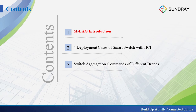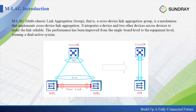As we said before, MLAG stands for Multi-Chassis Link Aggregation Group — this is a cross-device link aggregation group. It's a mechanism that can implement cross-device link aggregation. For example, usually when we make a link aggregation group, we aggregate two ports in the same switch together, such as port 1 and port 2. But if you want to aggregate ports across different switches, we can use MLAG.